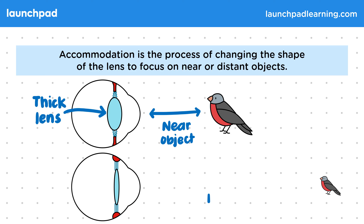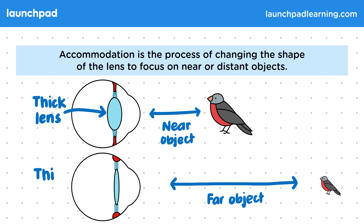However, when looking at a far object, to be able to see it in focus, the lens needs to be thin. Your eye adapting the thickness of the lens to see objects around you is a reflex — it happens automatically. Have a look around you now and test it out. This is called accommodation because our eyes are accommodating the need to look at objects at different distances.